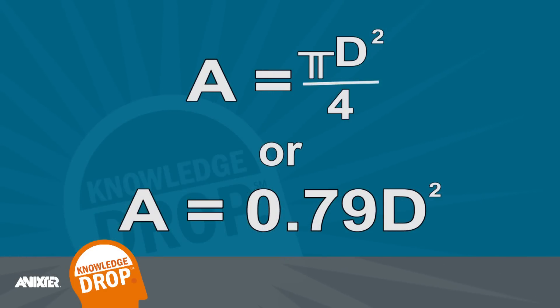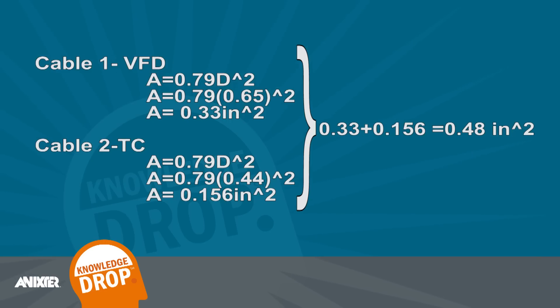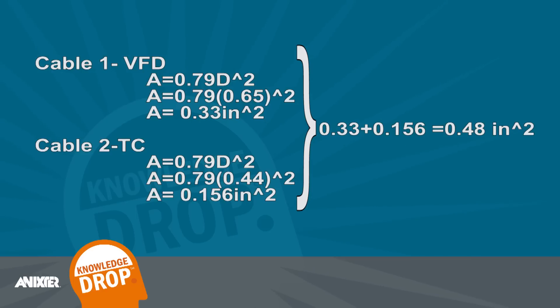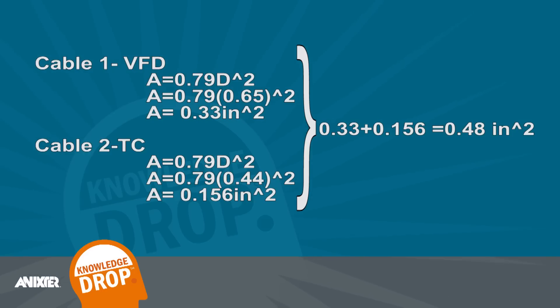Moving on, we need to calculate the total cross-sectional area. This is done by using the equation: area equals pi times diameter squared over four, or area equals 0.79 times diameter squared. The VFD has an outer diameter of 0.65 inches and the tray cable has a diameter of 0.44 inches. Inserting this into the equation, we find that the tray cable has a total cross-sectional area of 0.15 and the VFD has a total cross-sectional area of 0.33. Adding these two together, the total cross-sectional area is 0.48.